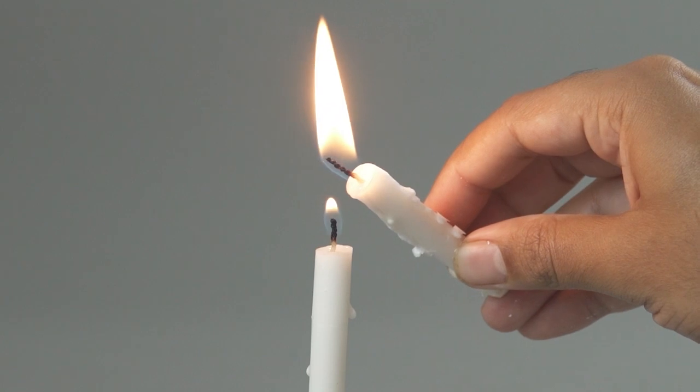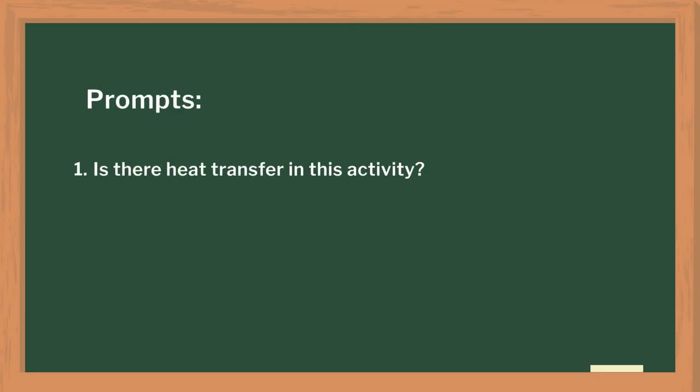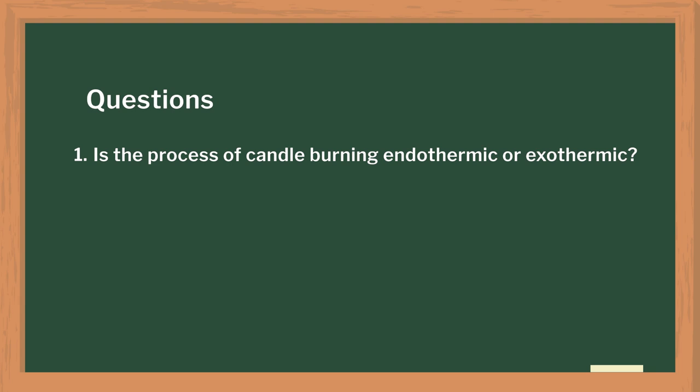Later, we conducted the next activity to explain system and surrounding. For this, we simply lit a candle and asked a few questions about system and surrounding, like: is there heat transfer in this activity? Is there a direction to the heat flow? After the demonstration, students discussed some questions like: is the process of candle burning endothermic or exothermic?